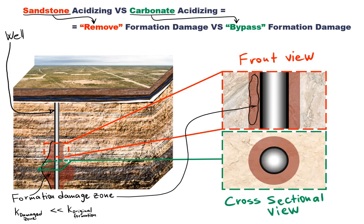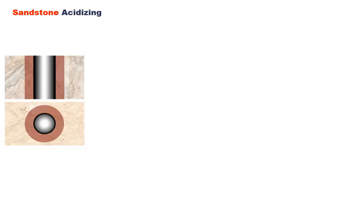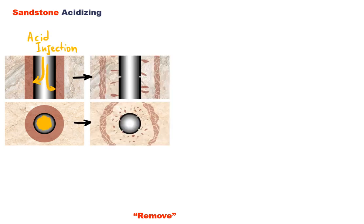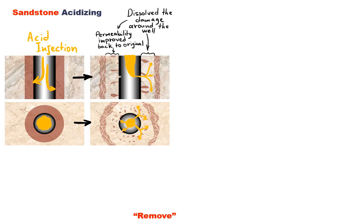Next I will use this view to illustrate the difference between sandstone and carbonate acidizing. First, let's discuss the sandstone acidizing case. In sandstone reservoirs, the goal of acidizing is to remove or dissolve the formation damage. By injecting acid in the reservoir, we dissolve the damaging material particles and push the solution deeper in the reservoir. Notice how the damage is almost fully dissolved in the near wellbore region. Only some spots remain untreated, but these spots will not restrict the flow of the hydrocarbons, and therefore this stimulation treatment will be considered successful.